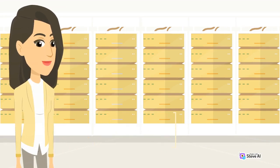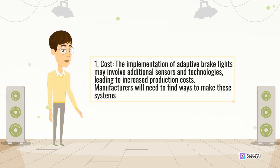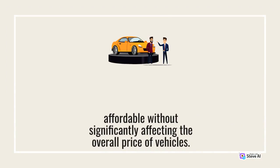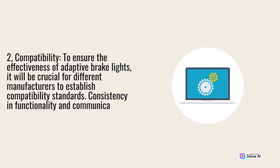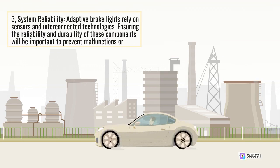Challenges in Implementation. 1. Cost: The implementation of adaptive brake lights may involve additional sensors and technologies, leading to increased production costs. Manufacturers will need to find ways to make these systems affordable without significantly affecting the overall price of vehicles. 2. Compatibility: To ensure the effectiveness of adaptive brake lights, it will be crucial for different manufacturers to establish compatibility standards. Consistency in communication protocols will be essential for seamless integration across various vehicle models. 3. System Reliability: Adaptive brake lights rely on sensors and interconnected technologies. Ensuring the reliability and durability of these components will be important to prevent malfunctions.